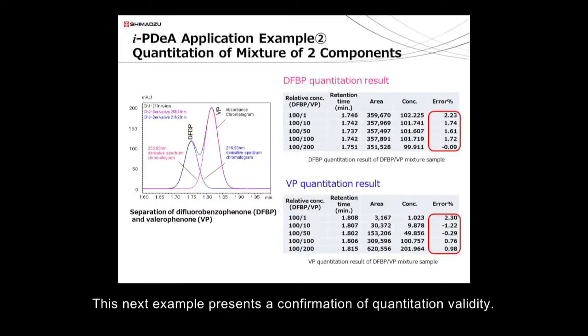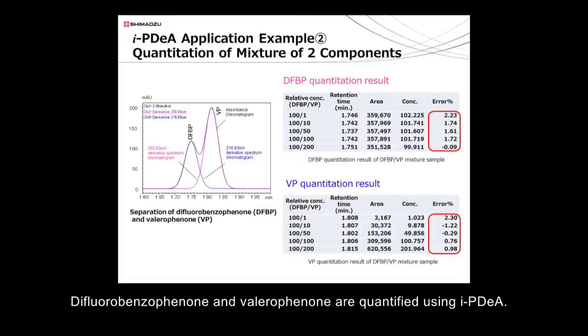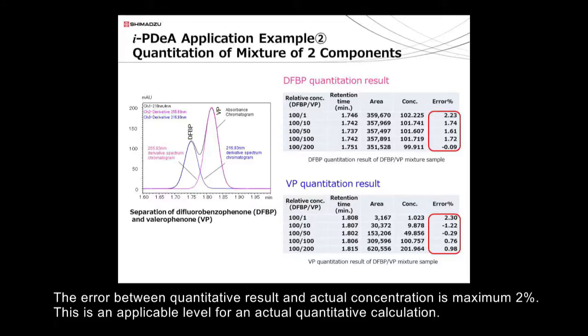This next example presents a confirmation of quantitation validity. Difluorobenzophenone and valerophenone are quantified using IPDA. The error between quantitative result and actual concentration is maximum 2%. This is an applicable level for an actual quantitative calculation.